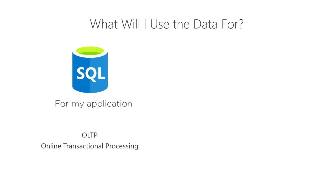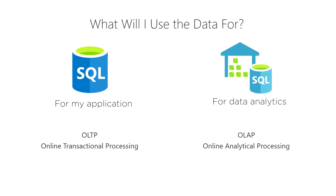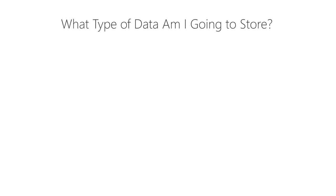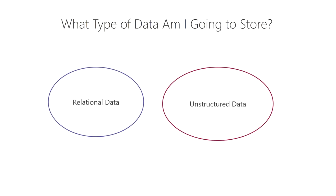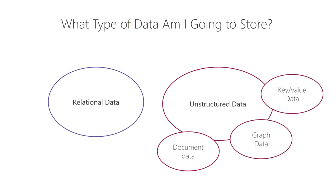What will I use the data for? Is it for your application — storing customer records on a website, for instance? That's online transactional processing (OLTP). Or is it for data analytics and reporting? That's online analytical processing (OLAP). The second question is: what type of data am I storing? Options include relational data, unstructured data, semi-structured data, document data, key-value data, and graph data.